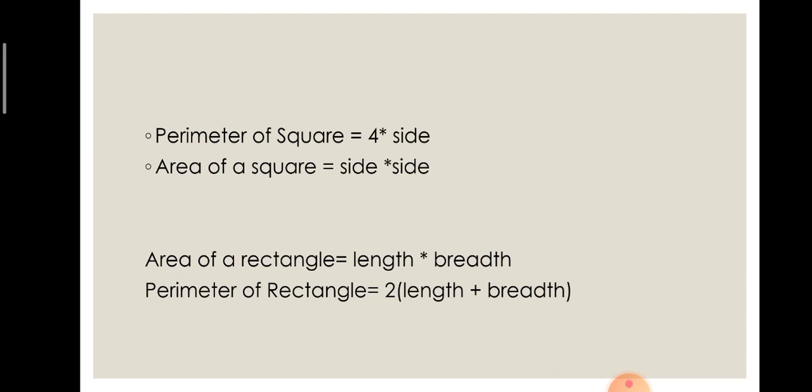First of all we discuss perimeter of square equal to 4 multiply by side. And area of square equal to side multiply by side. You know that the unit of the area is centimeter square and the perimeter of square unit is centimeter.